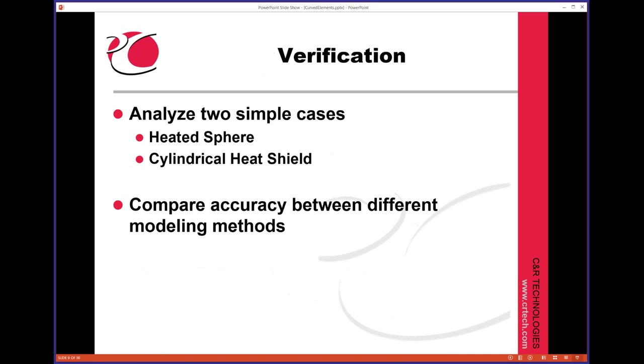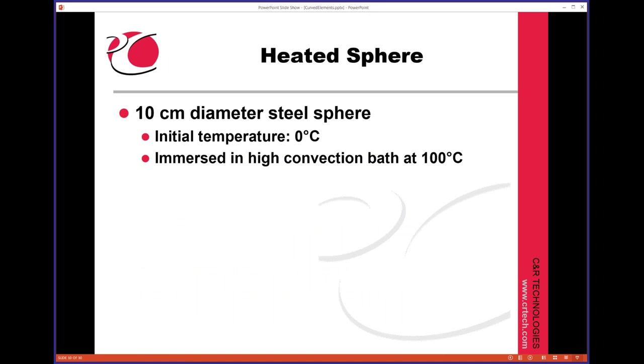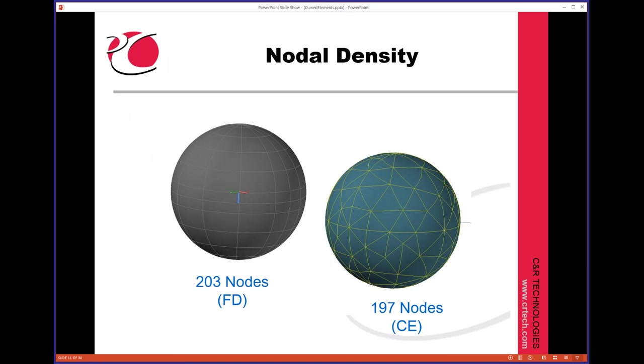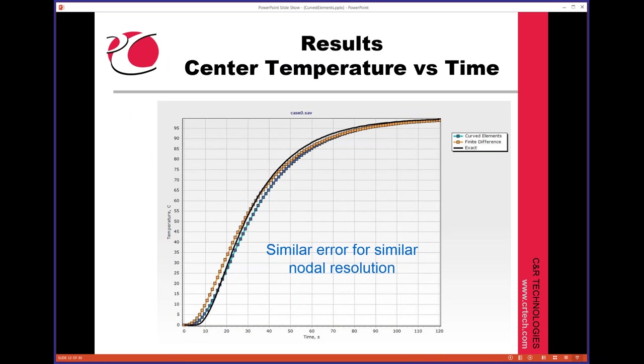So the verification here. This first case is just a 4-inch cannonball. We're going to put it in ice water, and then we'll drop it in boiling water. And we'll watch the temperature of the center of the sphere as a function of time. And we'll compare these methods and see what we get. So these are the two models. A few more nodes in the finite difference one, but essentially the same nodalization.